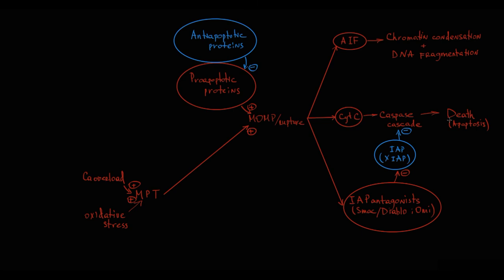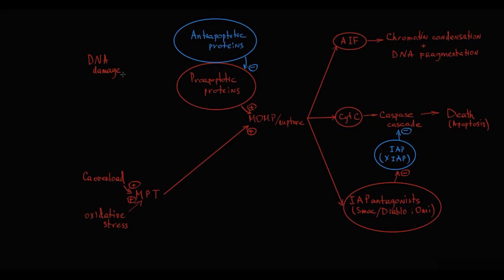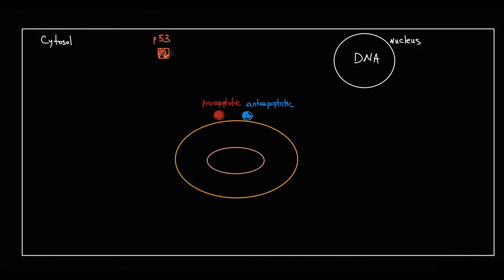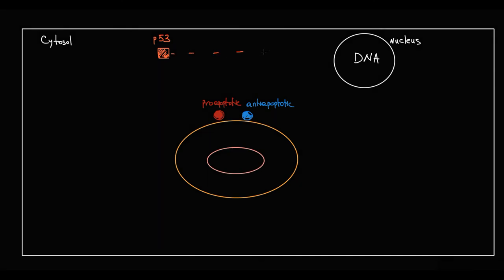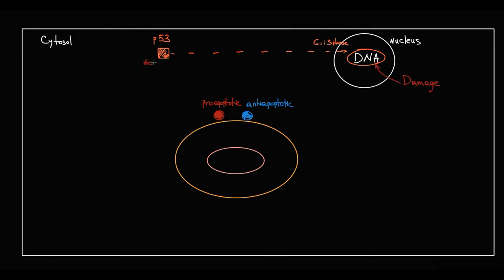Another way apoptosis can be activated by intrinsic signal is DNA damage. In this case, the major player is the protein p53. p53 molecules are located in the cytosol, but p53 has the ability to enter the nucleus between G1 and S phase, where it monitors the state of the DNA molecule. This protein is very sensitive to any DNA damage, and when DNA damage occurs, p53 becomes activated.